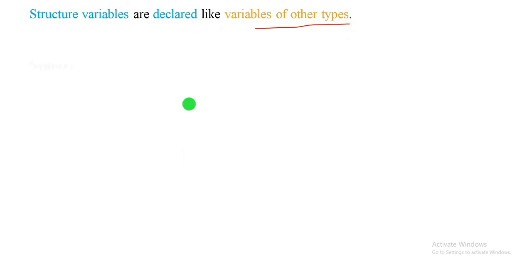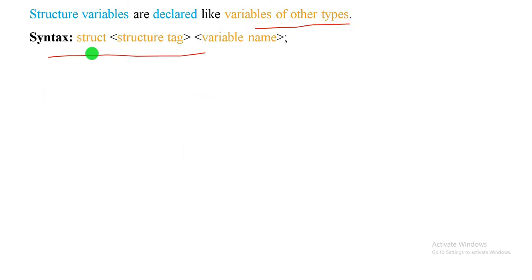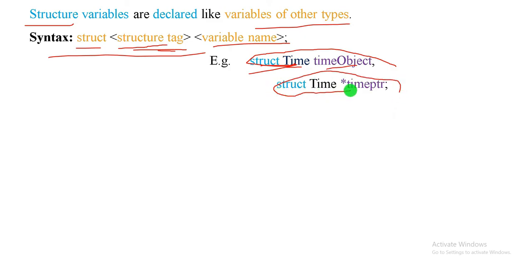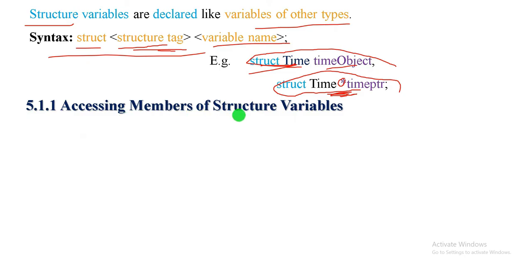How can we declare the structure variable? There is struct, then struct tag, then variable. The syntax for structure declaration includes the struct keyword, then the struct tag, then the variable name. For example: struct time, as the struct tag, then the variable name 'action' — these are the declaration of structure variables, including structure pointer declarations where the asterisk indicates a pointer.